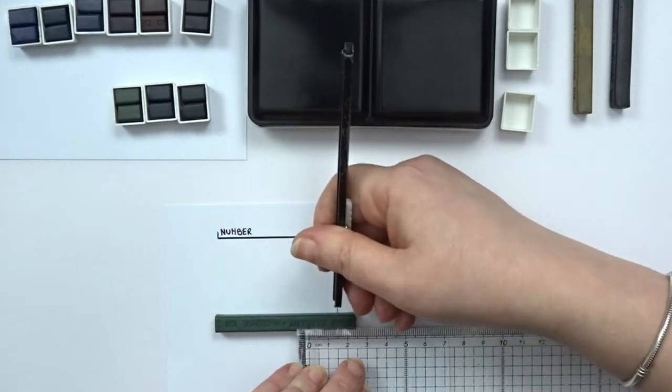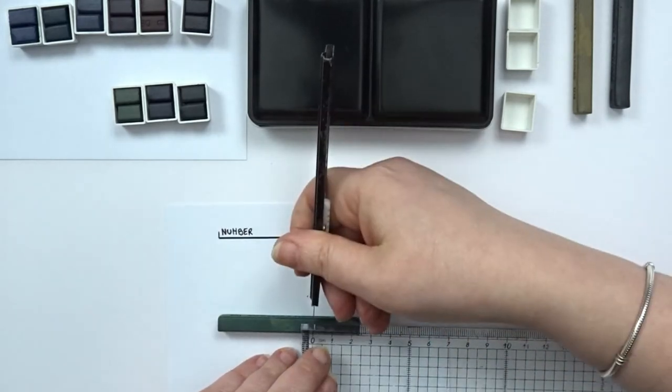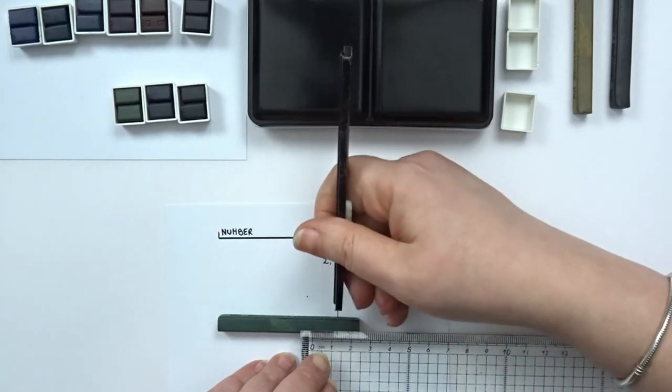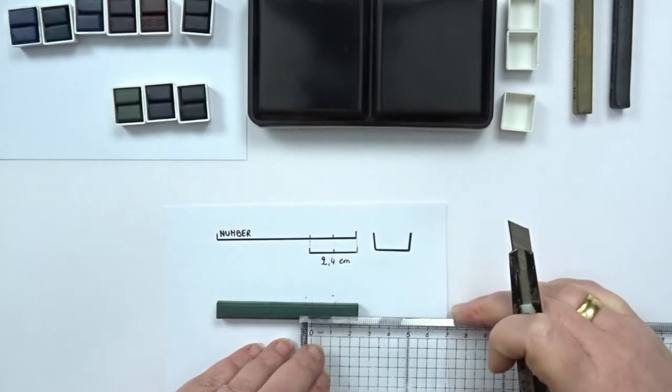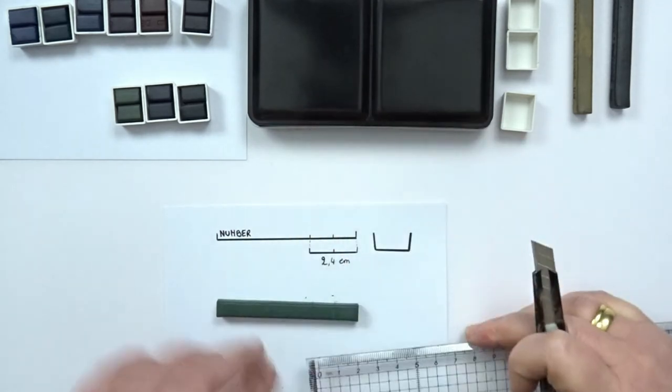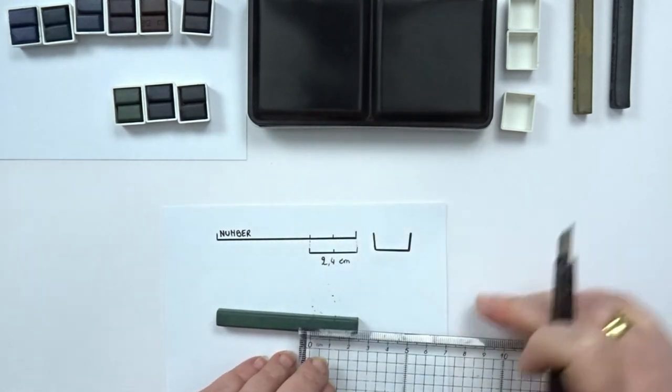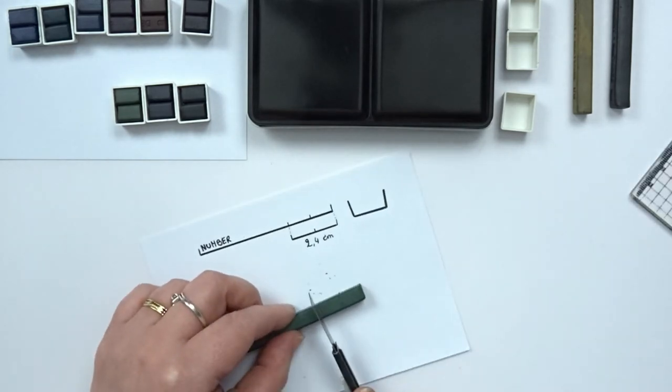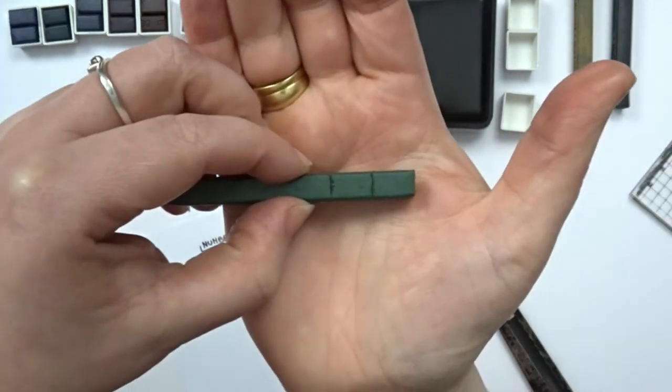So I start by marking off where I'll be cutting my block and then I just connect all the marks. I'm not cutting very deep, I'm just softly carving lines all around my block. Don't push too hard on your block or you can make it break.